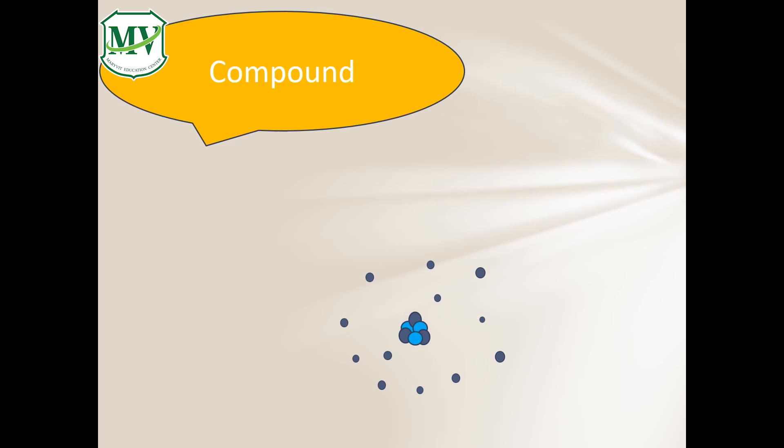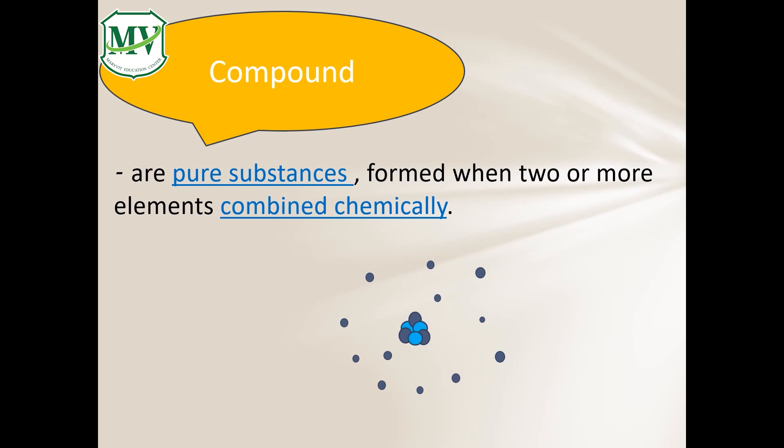Compound. Compounds are pure substances formed when two or more elements combine chemically in a chemical reaction. The smallest particle in a compound is molecule. Example of compound is water. Water is made up of the elements of oxygen and hydrogen. In each of the water molecule, one oxygen atom is bonded with two hydrogen atoms. All water molecules are similar.